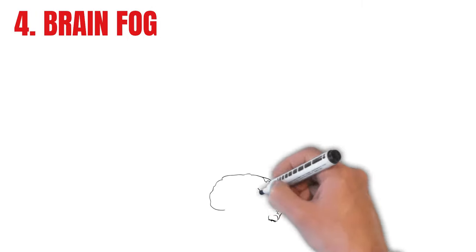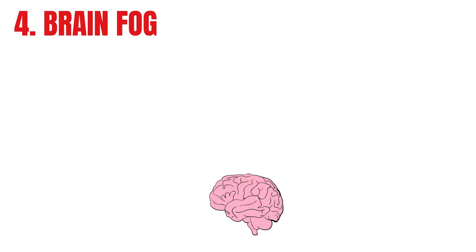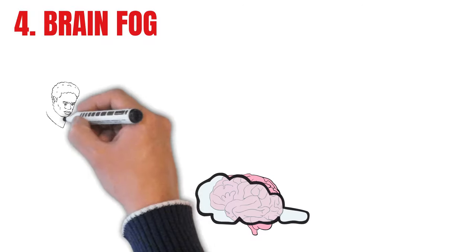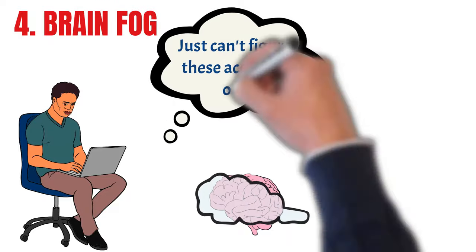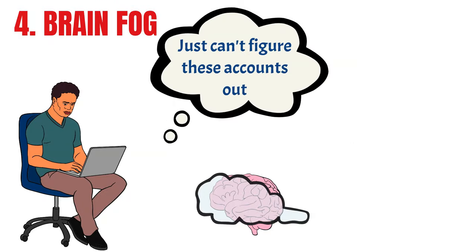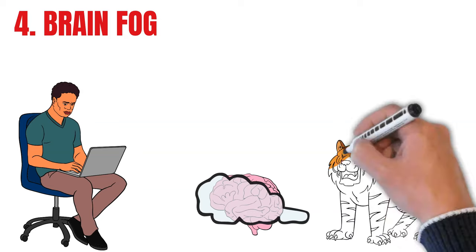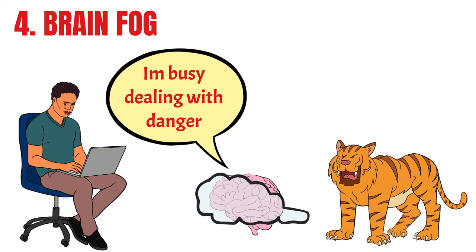Number four is concentration problems, or brain fog. The release of adrenaline and cortisol have an effect on how the brain operates. This may be an evolutionary response, where your brain shuts down unnecessary thinking processes to focus on functions to deal with the perceived danger.